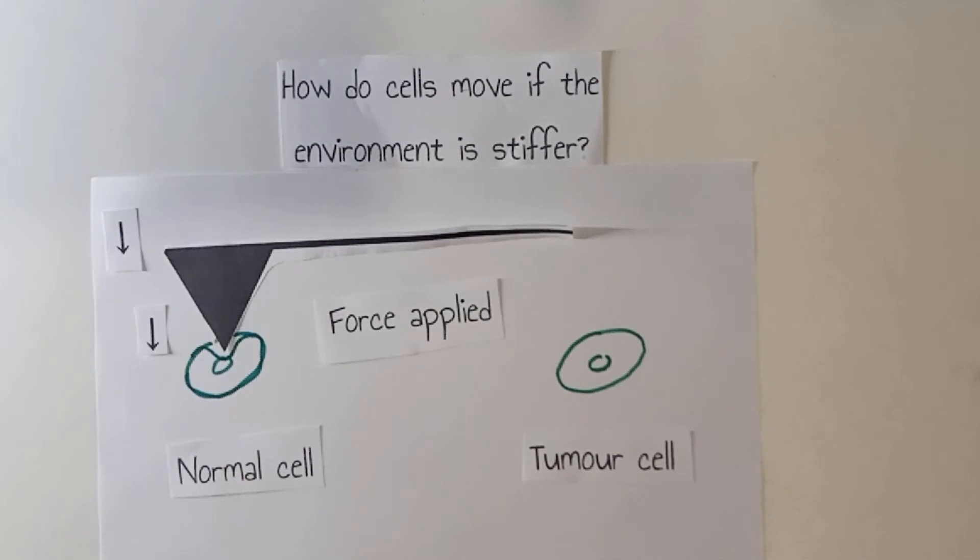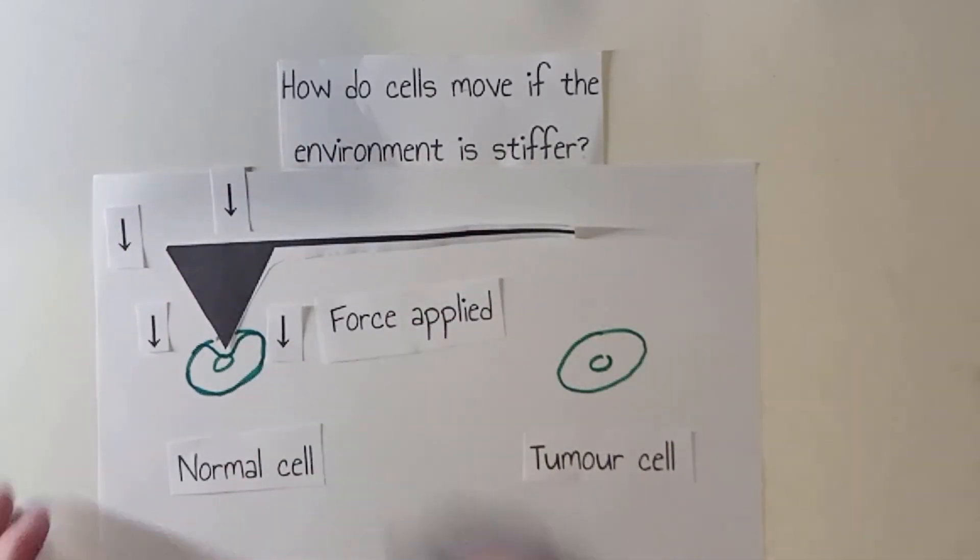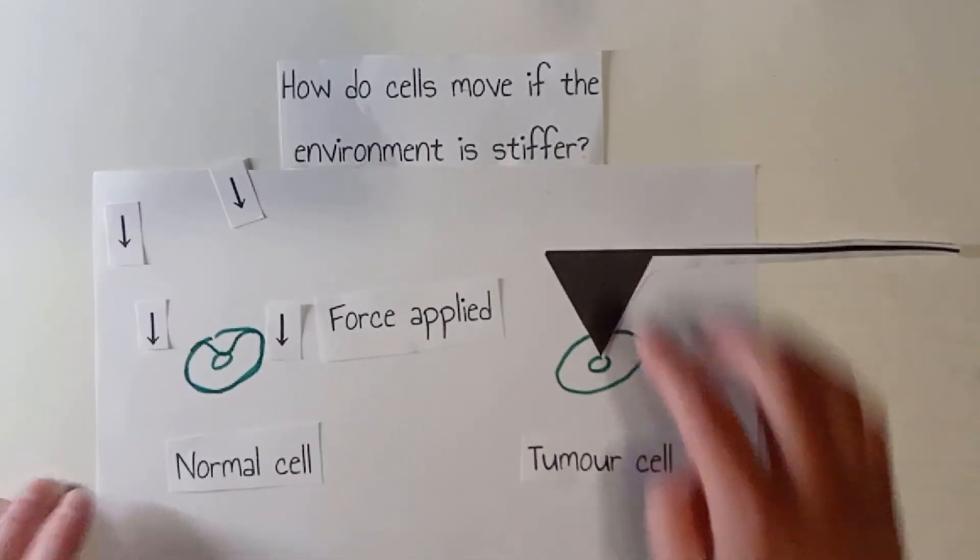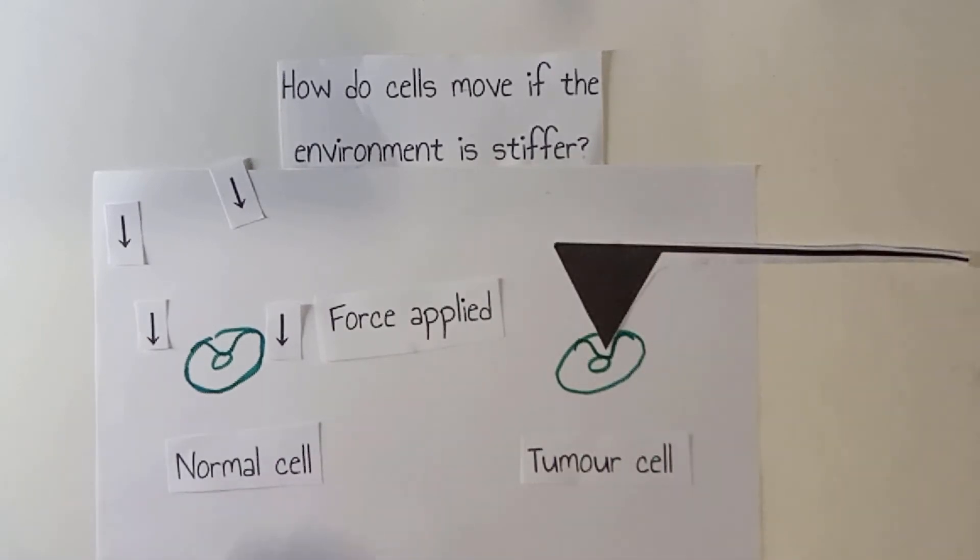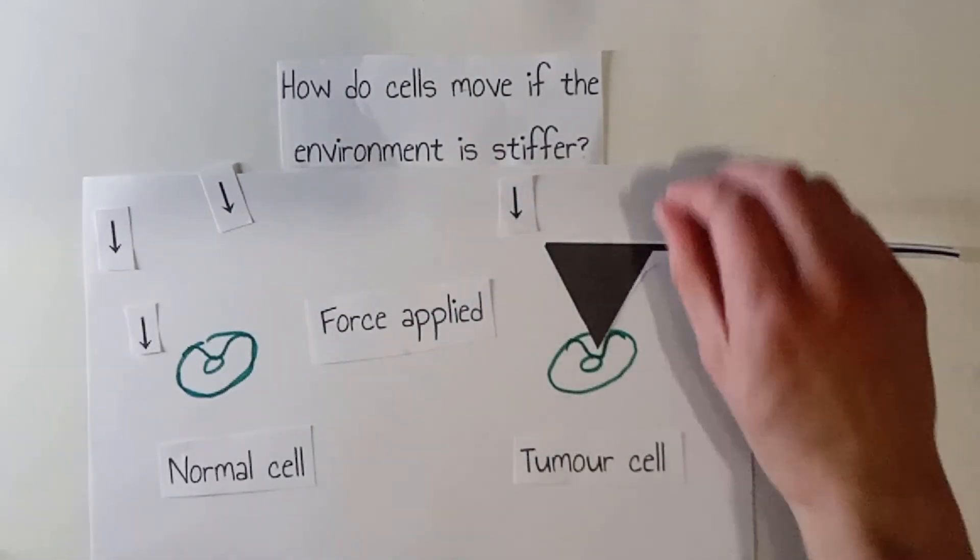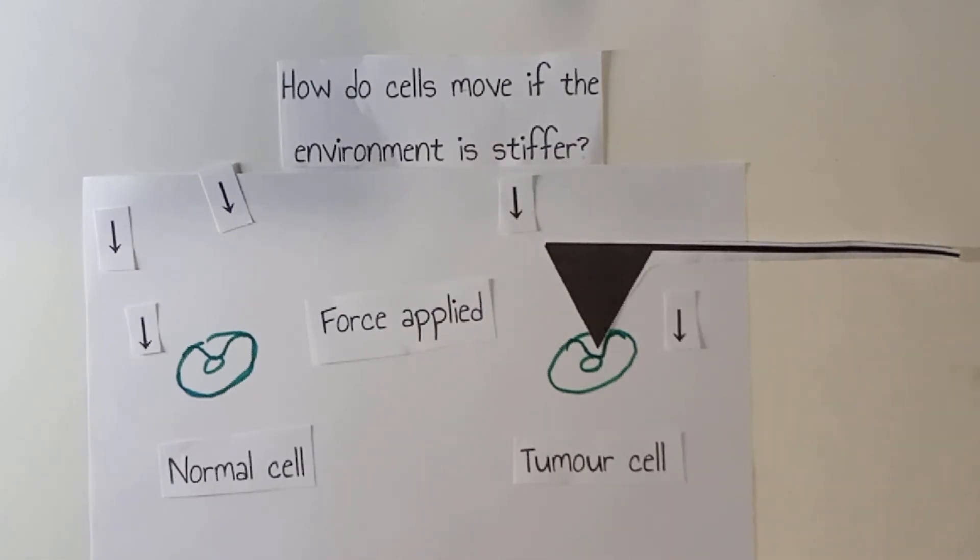Doing so, we will see that a normal cell requires more force to be deformed than a tumor cell. Tumor cells being softer than normal ones, they can more easily spread even in a crowded environment, thus explaining their capacity to invade normal tissue.